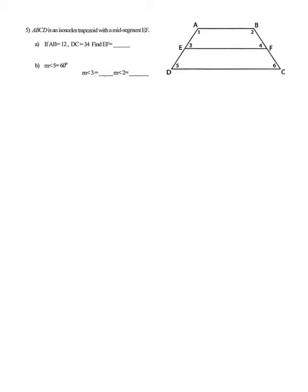Now we're into our isosceles trapezoid with a mid-segment EF. With this trapezoid ABCD we have parallel bases, so AB and DC are the parallel bases. Since it's isosceles, the legs AD and BC are congruent, and then we have this mid-segment EF, and that's actually the first thing we're asked to find.